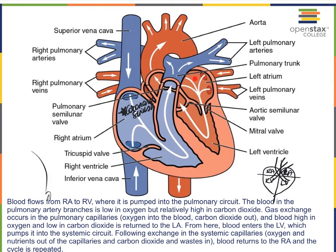From the left atrium, through the mitral valve — also called the bicuspid valve — the blood enters the very thickly walled left ventricle. Then once again, the left ventricle pushes the blood through the aortic semilunar valve into the aorta.